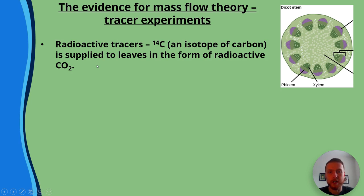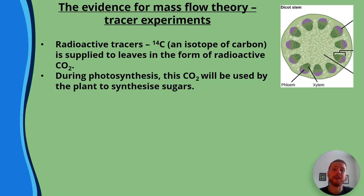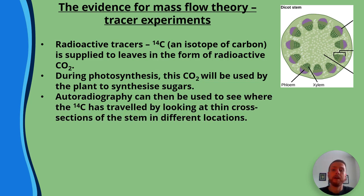Radioactive tracers: carbon-14, an isotope of carbon, can be supplied to leaves in the form of radioactive carbon dioxide. During photosynthesis, this carbon dioxide will be used by the plant to synthesize sugars. Autoradiography can then be used to see where the carbon-14 has traveled by looking at thin cross-sections of the stem at different locations.